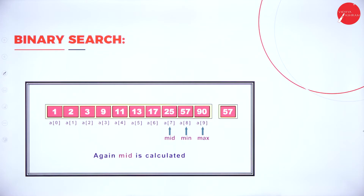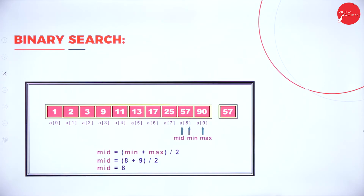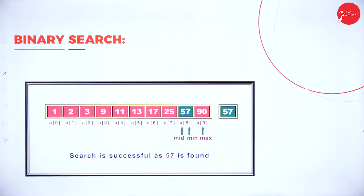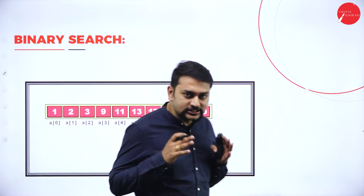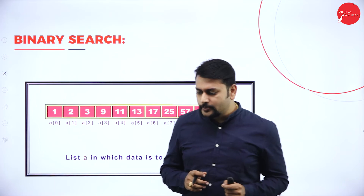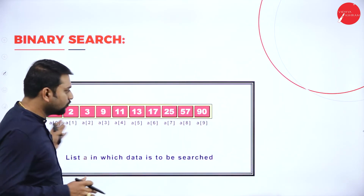25 is also less than 57, so I assume a[8] becomes the new minimum. I calculate the mid again: (8 + 9) / 2 = 8. So the mid value is again a[8]. The value at a[8] is 57, and the value I want to search is 57 — element found! This is a successful search using binary search.